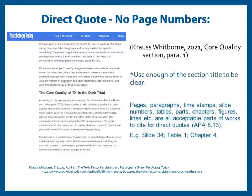In this example, we're citing from the first paragraph of the section titled 'The Core Quality of D in the Dark Triad' from our article. The in-text citation format is author last name, comma, year, comma, the section name capitalized, along with the word 'section' (not capitalized), comma, para. (for paragraph), period, space, and then the paragraph number. Here we used the name 'Core Quality' for our section and noted our quote was taken from the first paragraph.